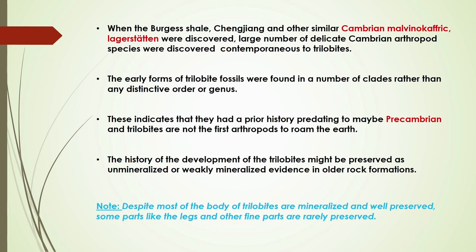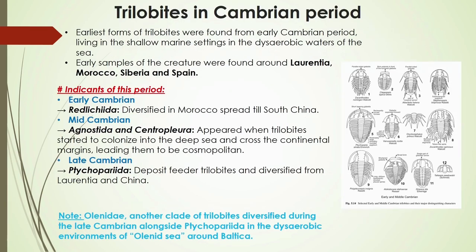More and more trilobite fossils are found in Paleozoic formations. Despite being well fossilized, the fossil record does not preserve the soft parts of the trilobite body. The first trilobites are believed to be from the early Cambrian, and species in this period are believed to be shallow marine dwellers.